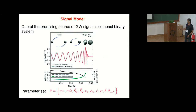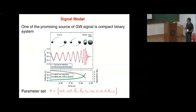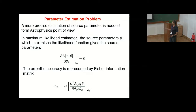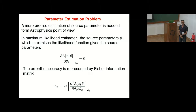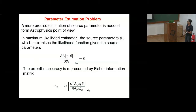In parameter estimation, one must account for all parameters, not just the intrinsic ones — the parameter space is usually large. The likelihood function takes its maximum value when the estimated parameters match the signal parameters, and the accuracy of the parameters is given by the Fisher information matrix, computed from its expectation value. This is the frequentist way of calculating estimated parameters and their associated errors.